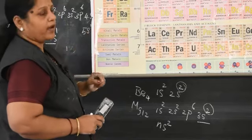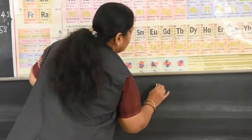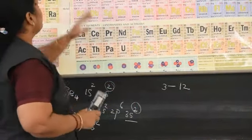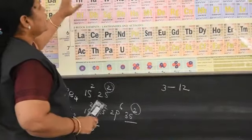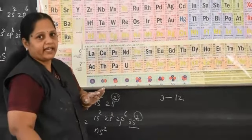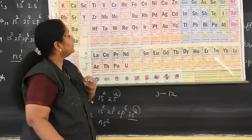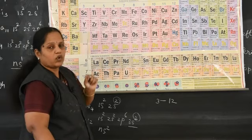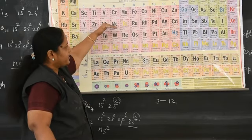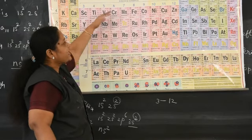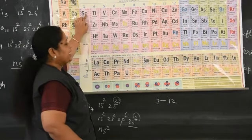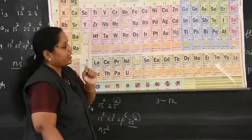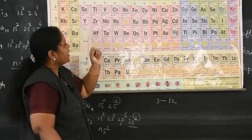The elements belonging to groups 3 to 12 are called D block elements. There are totally 40 D block elements, further divided into 4 series, each containing 10 elements. When you write the electronic configuration for these elements, the last electron enters a D orbital. The first series is called the 3D series.